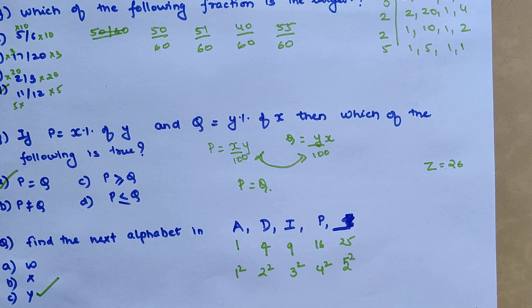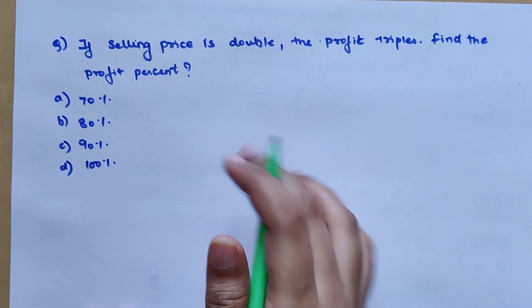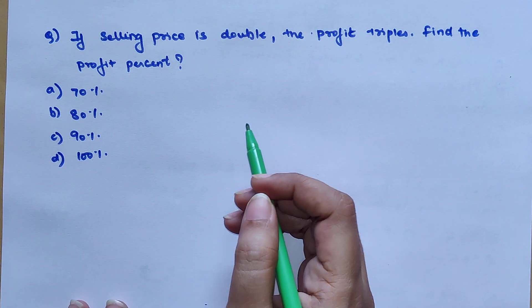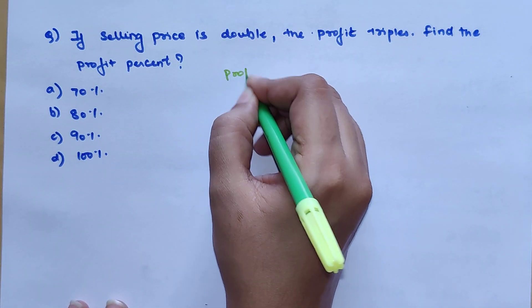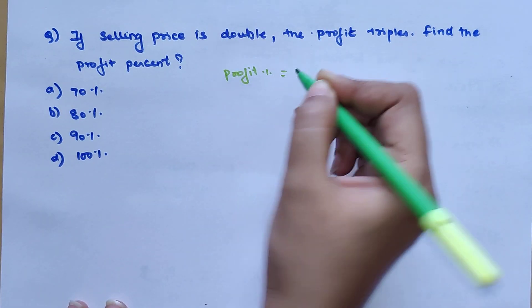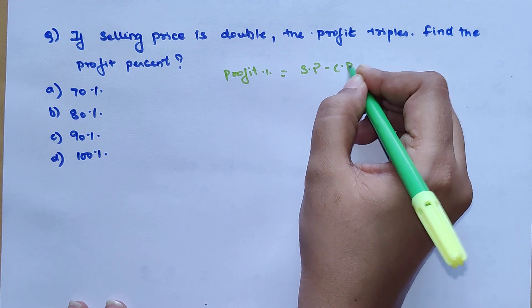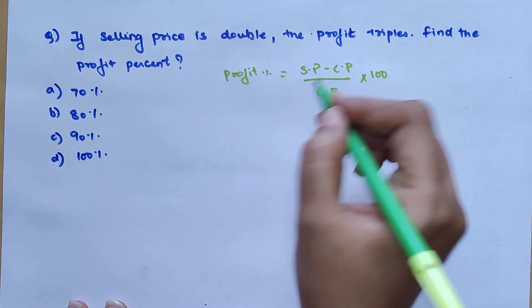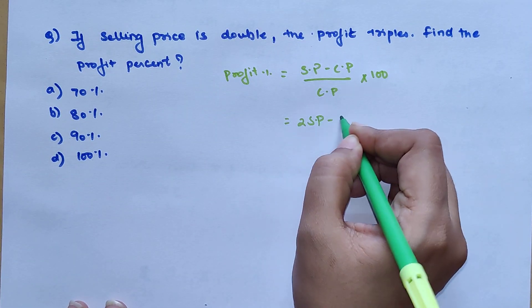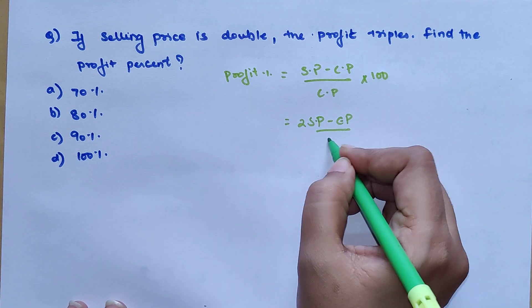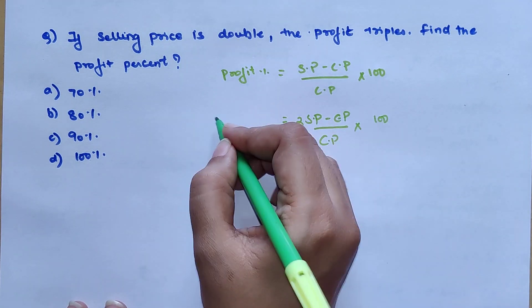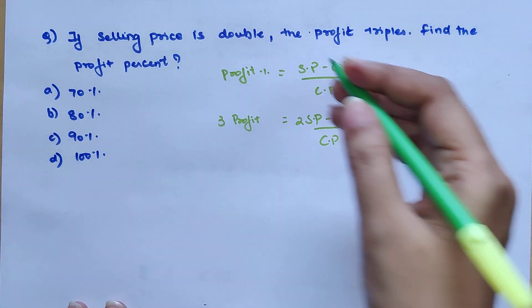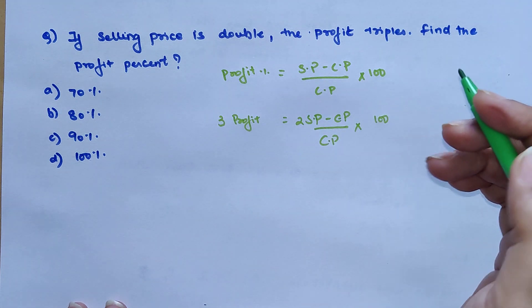The question is: if selling price is doubled, the profit triples, find the profit percentage. Please understand what is profit percentage - it's nothing but selling price minus cost price upon cost price into 100. They are saying that if selling price is double, so 2 SP minus cost price, that time this becomes three times profit.